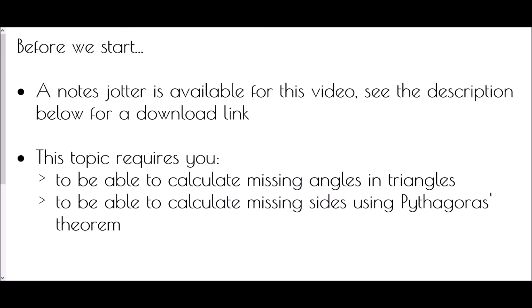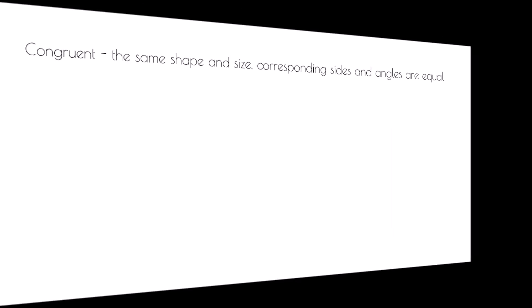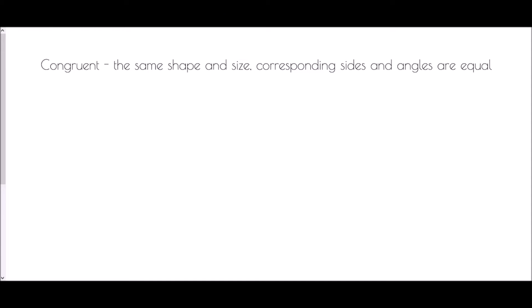Hi and welcome to Congruent Triangles. Just before we start, a reminder that there is a notes jot reveal for this video — just check the description below for a download link and you can work along with me. So, to start with a definition: if shapes are congruent, they are the same shape and size, and all corresponding sides and angles are equal.